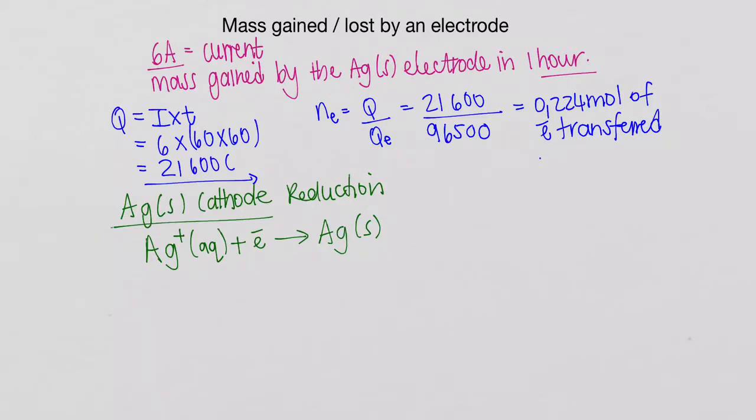If we have a look at the ratio here, so the ratio of electrons, the number of moles of electrons to the number of moles of silver solid, because this is a balanced equation, it's a one-to-one ratio.